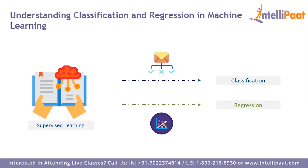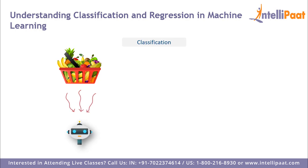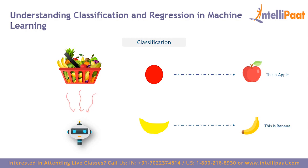In supervised learning we have two terms: classification and regression. To understand how they originate, suppose you're given a basket filled with different kinds of fruits. You train the machine with each fruit — for example, a rounded object with a depression at the top and red color is labeled as apple; a long curving cylinder with green or yellow color is labeled as banana. The machine learns from this training data and then applies that knowledge to classify new fruit correctly.